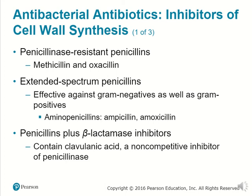Extended-spectrum penicillins can include aminopenicillins such as ampicillin and amoxicillin — penicillins that have beta-lactamase inhibitors preventing beta-lactamase from destroying them. They contain clavulanic acid, which is a non-competitive inhibitor of penicillinase. It attaches to an allosteric site, but not the active site of the enzyme, preventing it from tearing apart the penicillin.